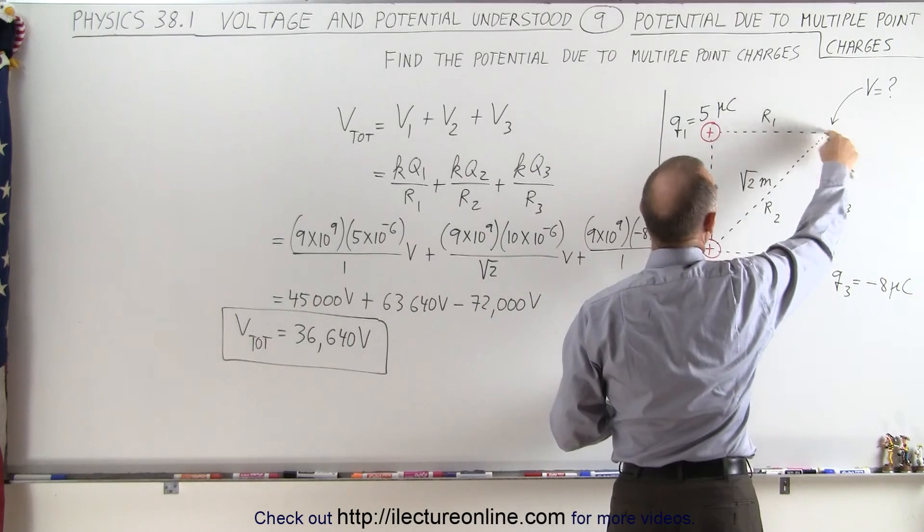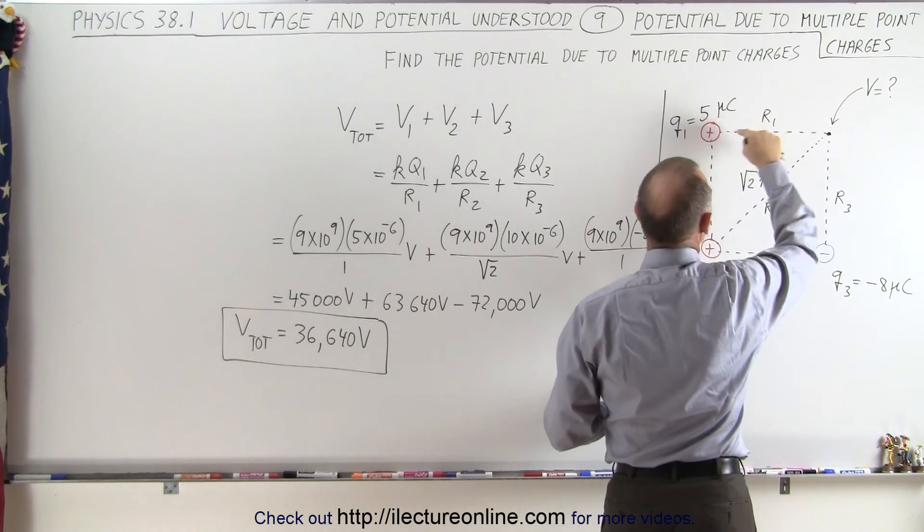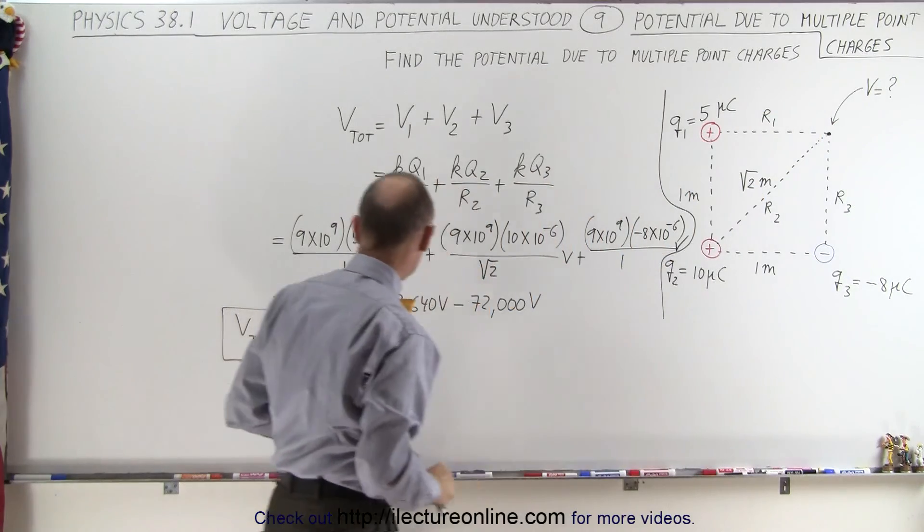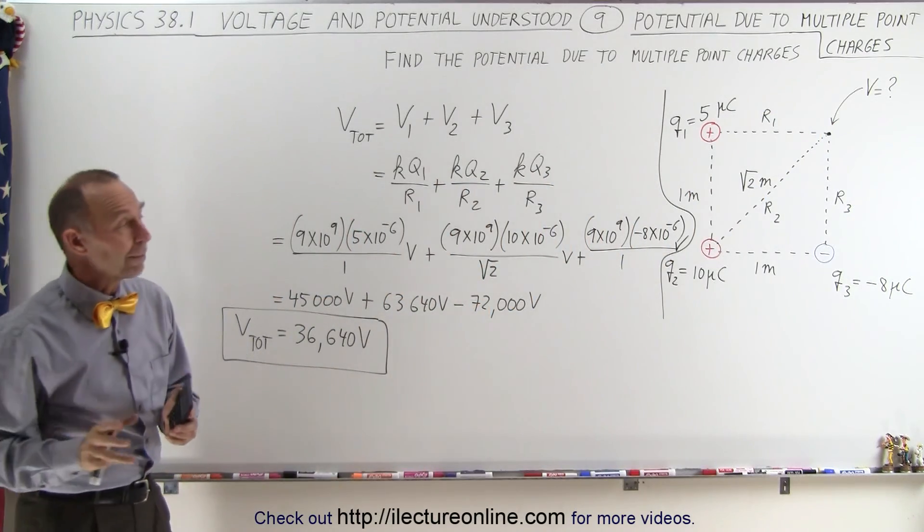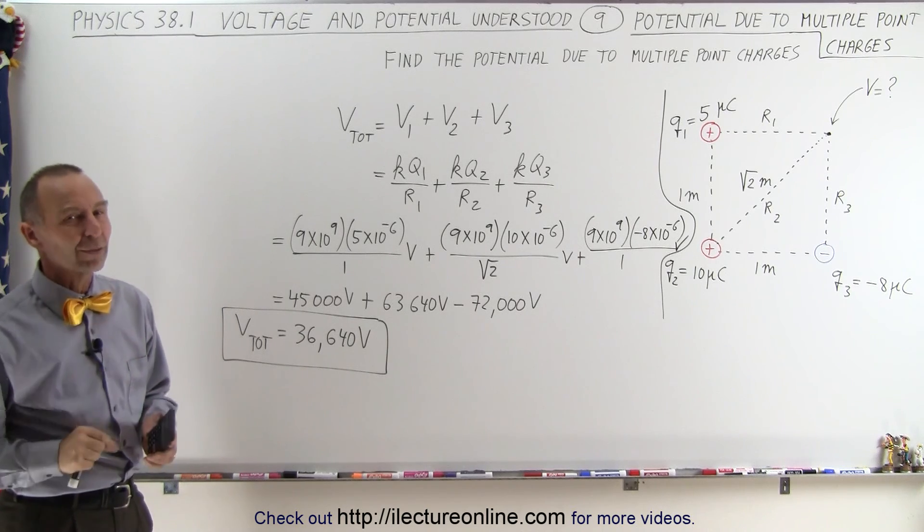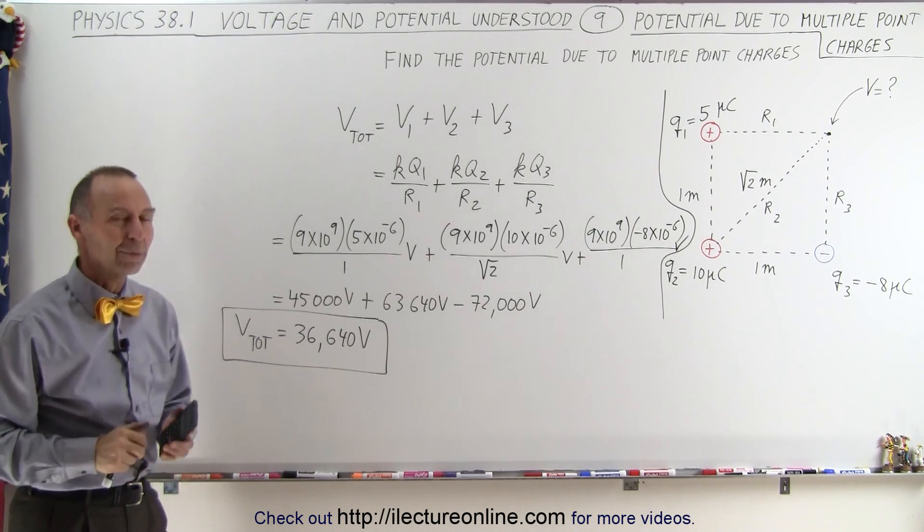So simply, what we do is we calculate the individual voltage contributed by each of the three charges, add them together, and that will be the voltage at that location. Notice, the only thing that matters is the charge on each charge, and the distance away from the point. And that's how it's done.